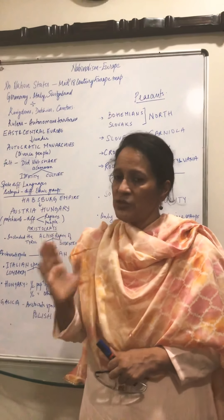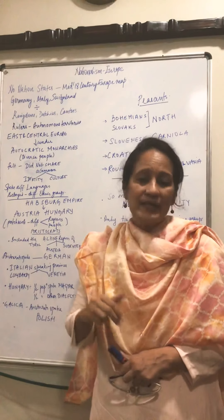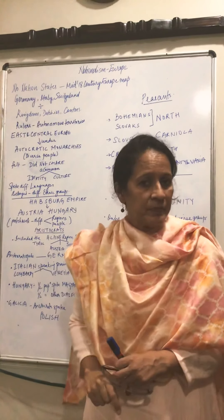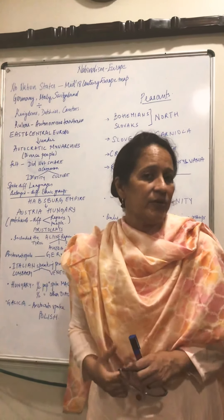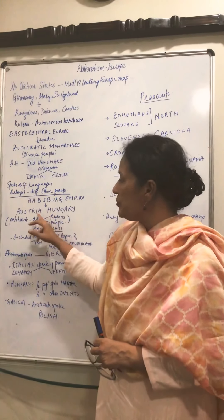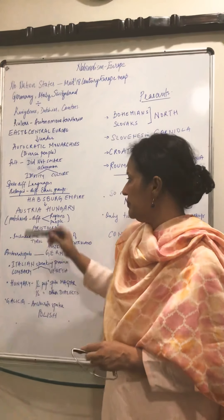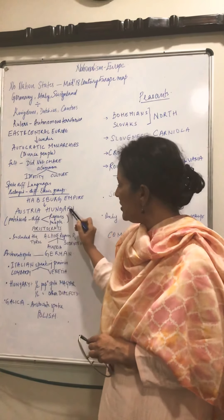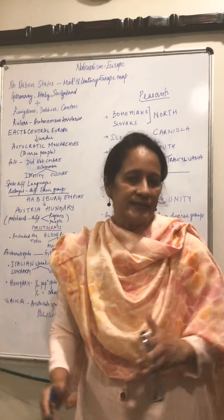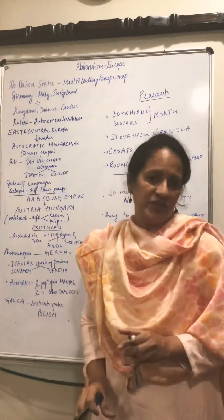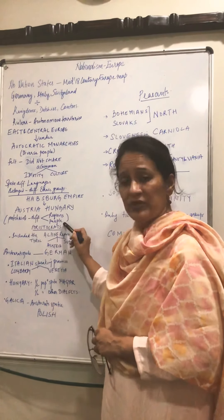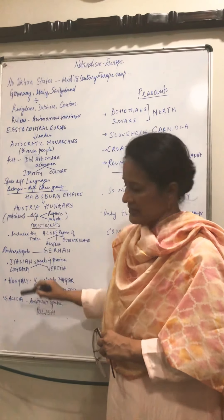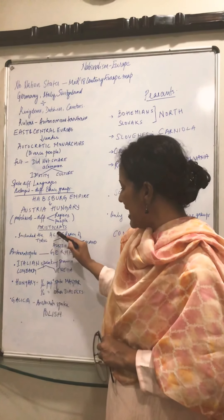Now the main body: A is aristocrats and B is peasants. We speak about the Habsburg Empire, which was a very powerful empire of Europe. The Habsburg Empire ruled over Austria-Hungary. It was a patchwork of different regions and people - not one consolidated territory.